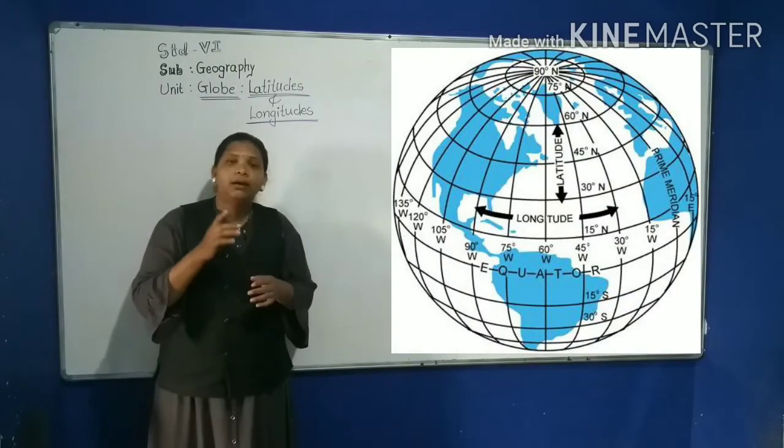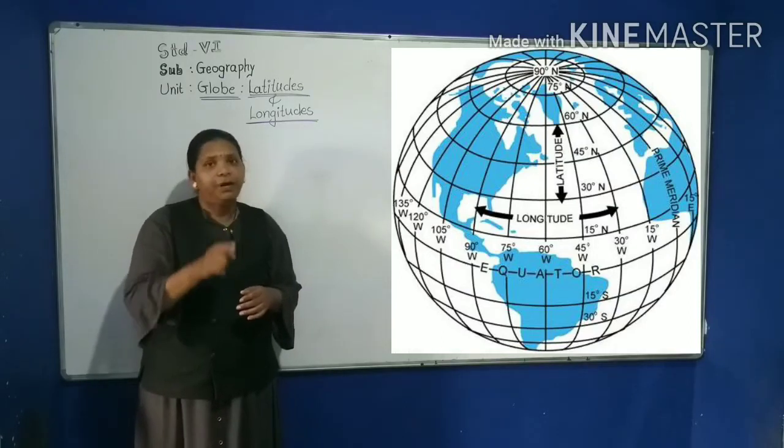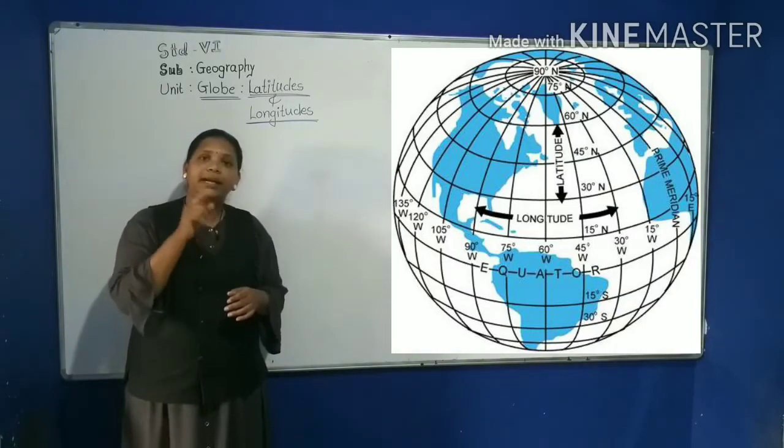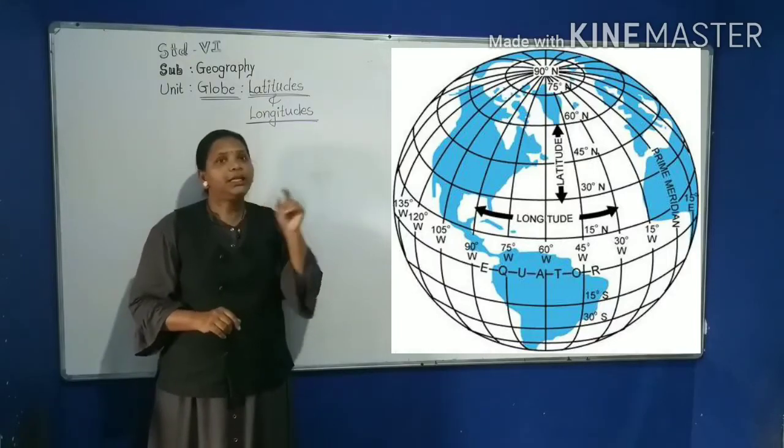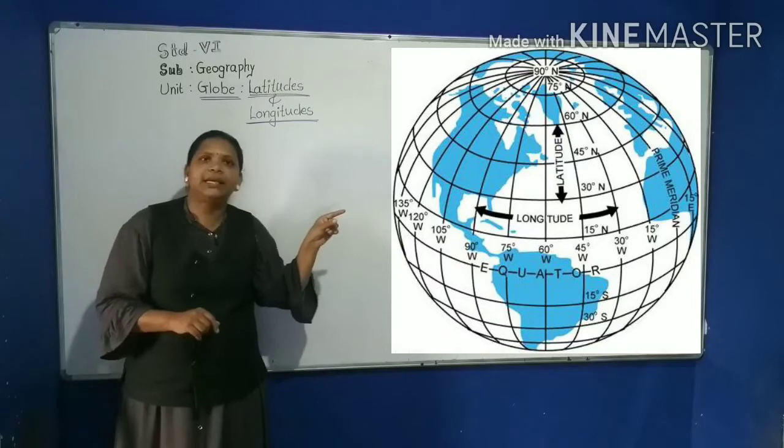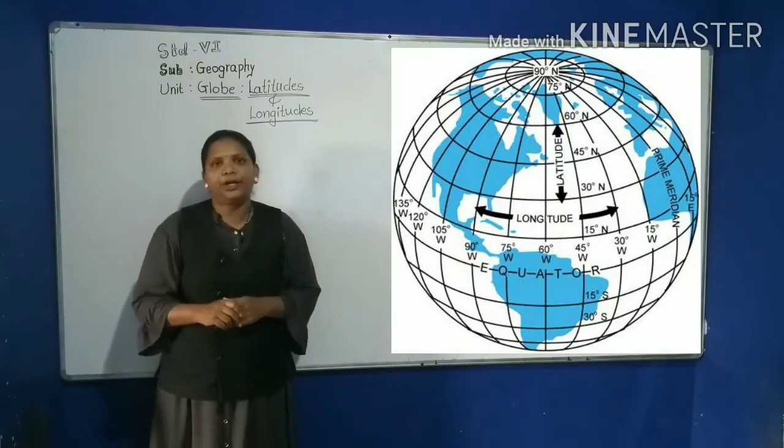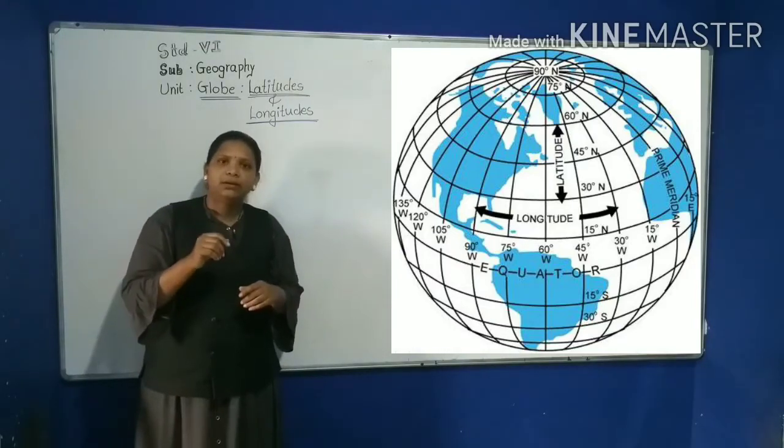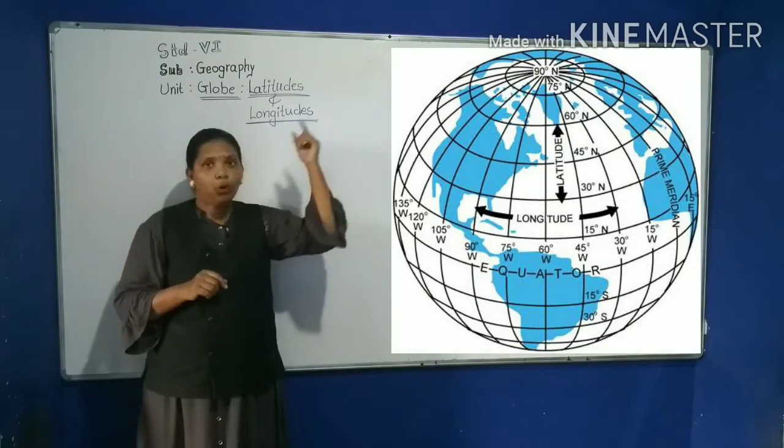Thus, there are 181 parallels including the equator. The equator represents the 0 degree latitude. The distance from the equator to the poles.